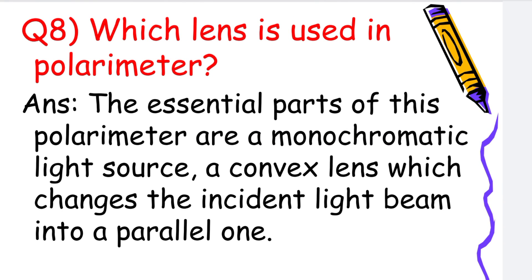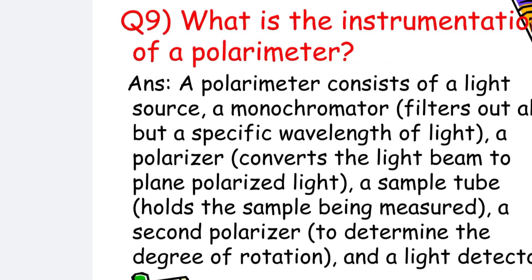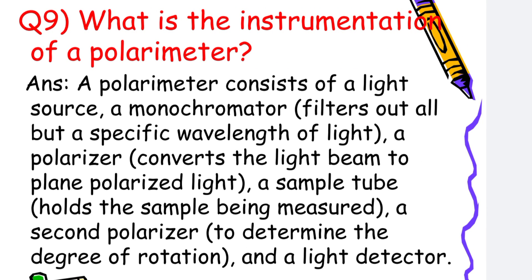Which lens is used in a polarimeter? The essential parts of a polarimeter are a monochromatic light source and a convex lens which changes the incident light beam into a parallel one. What is the instrumentation of a polarimeter? A polarimeter consists of a light source, and a monochromator that filters out all but a specific wavelength of light.